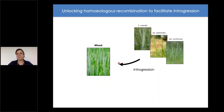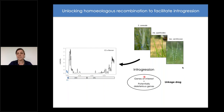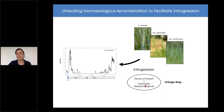If we can unlock homeologous recombination, we will obviously increase the efficiency of introgression. There is also the problem of linkage drag: only huge DNA fragments are introgressed, meaning not only the interesting genes come in, but also a potentially large number of deleterious genes. For example, the 2N introgression from Aegilops ventricosa on the 2A chromosome shows completely inhibited recombination in that region. Unlocking homeologous recombination would both increase introgression frequency and help address linkage drag.